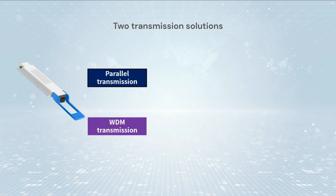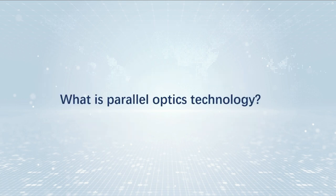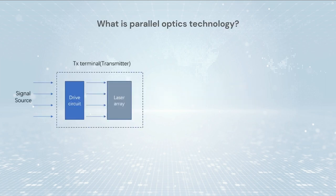In the data center there are two transmission solutions: parallel and WDM. In current 100G data centers, short distance optical modules use more parallel technology, while WDM technology is widely used in long distance transmission.